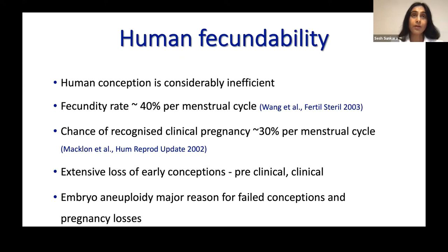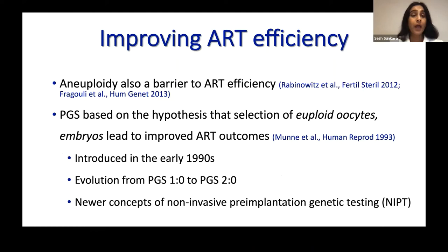So a bit about the background. We all know that human conception is considerably inefficient — we are the most inefficient reproducers when it comes to mammals. The fecundity rate, if we are very generous, is around 40% per menstrual cycle, and the chance of a recognized clinical pregnancy is around 30% per menstrual cycle. Extensive loss of pregnancies occurs in early conception at preclinical and clinical stages, and embryo aneuploidy is the major reason for pregnancy losses.